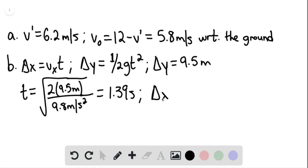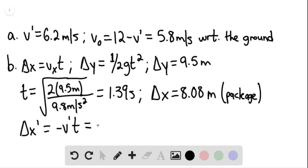Given this, delta X equals 8.08 meters for the package. Delta X prime for the helicopter equals negative V prime times t, which equals negative 8.63 meters.